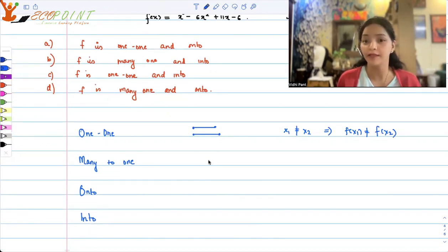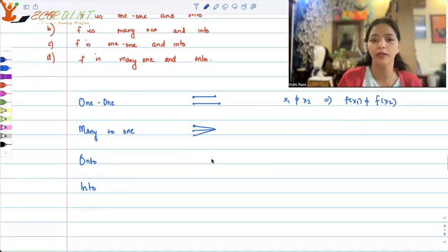Many to 1 means, as the name suggests, two inputs at the least are going to one output. Many inputs go to one single output. It could be more than two also. So many inputs are going to just one output. That is what is many to 1.